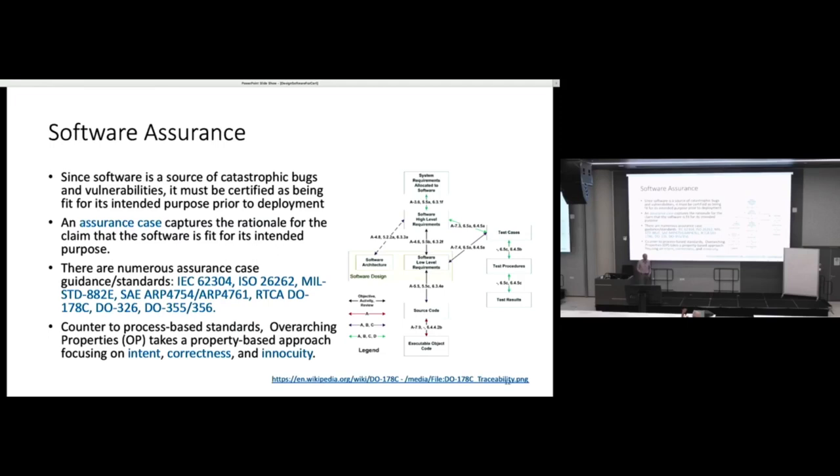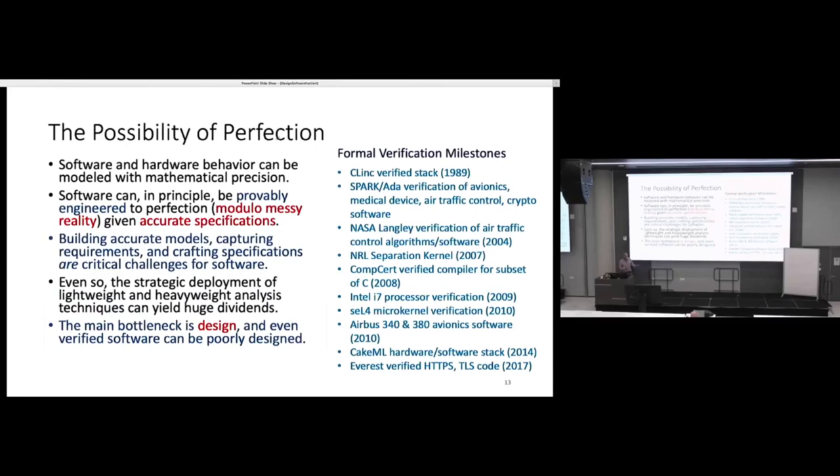There are traceability links. There are claims associated with these that you have to establish. Lately, there's been a current away from this towards something called overarching properties. You think of assurance in terms of three legs to a table: intent, correctness, and innocuity. Intent is, are you building the right software? Correctness is, are you building the software right? And innocuity is, is there nothing else in it?